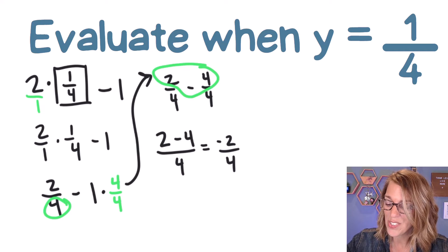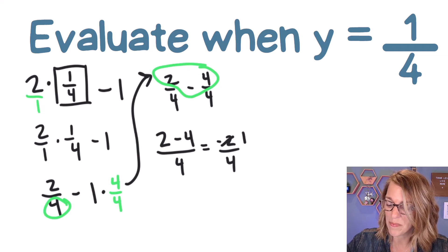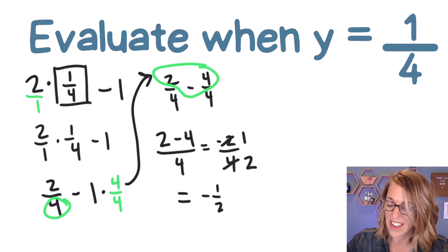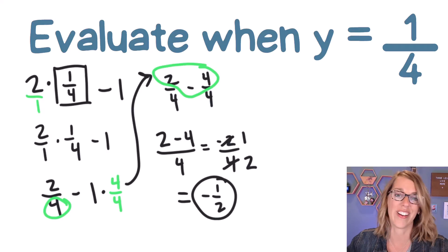2 goes into everybody. 2 goes into 2 one time. 2 goes into 4 two times. And I end up with our answer, finally, of a negative 1/2.